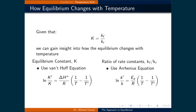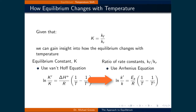This means that to understand how the equilibrium will change as a function of temperature, we can use both the Van't Hoff equation to modify the equilibrium constant, or we can use the Arrhenius equation to modify both rate constants.